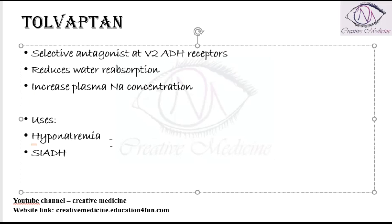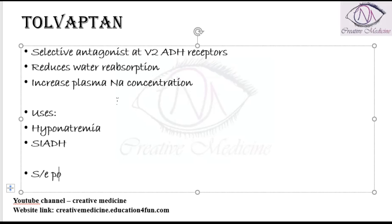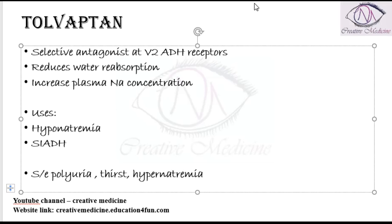Tolvaptan can be used in hyponatremia and also in syndrome of inappropriate anti-diuretic hormone secretion (SIADH). The side effects of Tolvaptan are: it can cause polyuria because of excessive water excretion, thirst, and obviously hypernatremia.